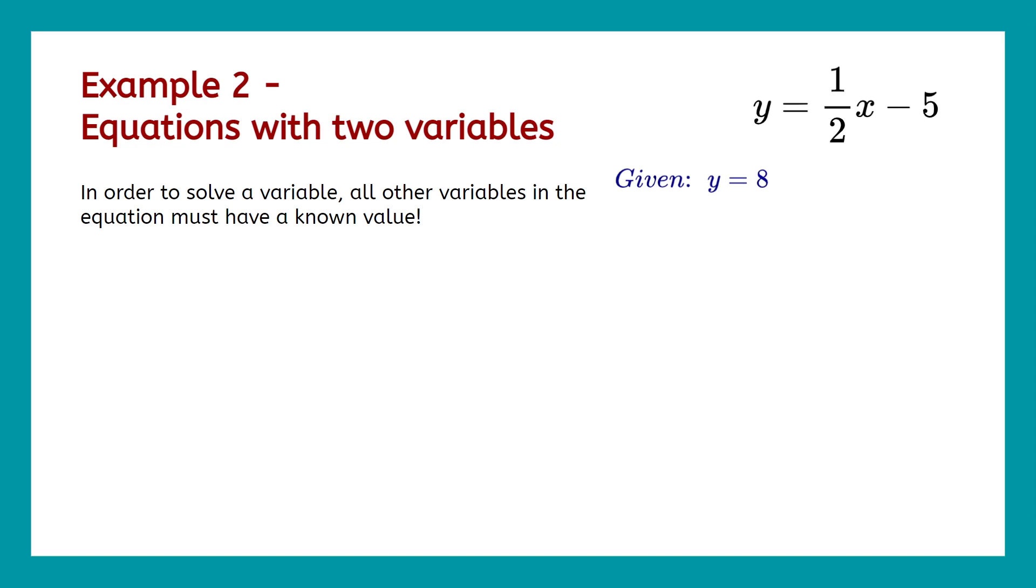Now we'll increase the complexity just a bit. We'll do equations with two variables. So here we have y equals 1 half x minus 5. We're also told that y is equal to 8. And so the very first step here is to plug in values for our known variables. In this case, we know y. It's equal to 8. So we'll plug it in. And then we get 8 equals 1 half x minus 5.